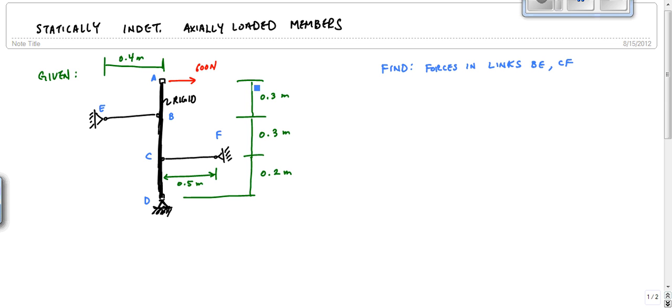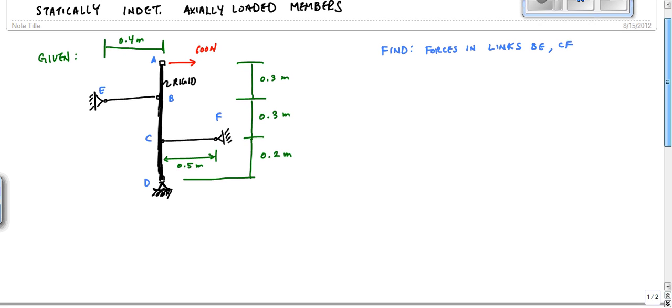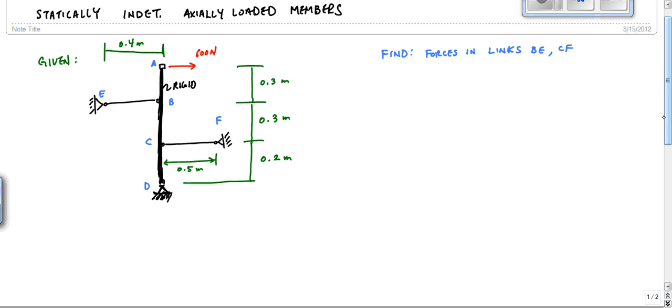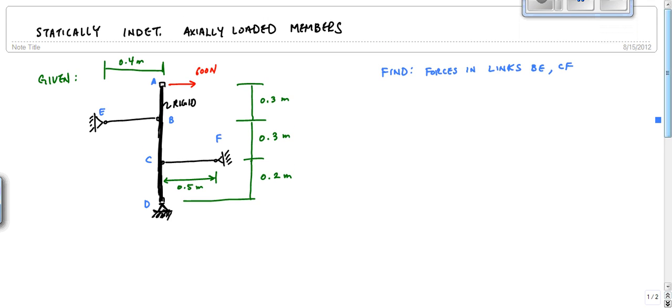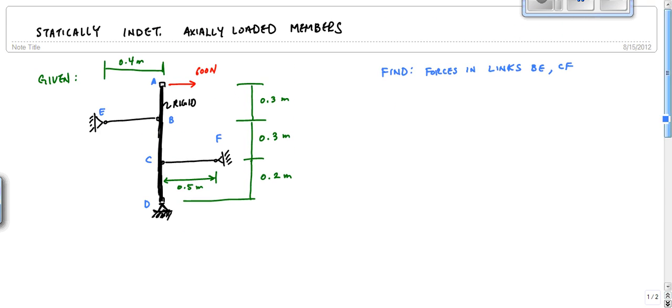And then three distances: 0.3 meters for segment AB, segment BC, and then 0.2 meters for segment CD. The length of CF is 0.5 and then 0.4 meters. Could I have made it any more complicated? So the first thing you want to do is draw a free body diagram. The first thing is a free body diagram, and you have a couple choices here.